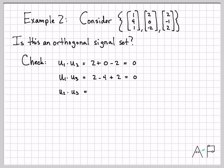And then the last thing I need to check is u2·u3. So I get 2 times 2 is 4, 0 times -1 is 0, -2 times 2 is -4. And I get 0. So every pair that I've selected is orthogonal to each other. So this is an orthogonal signal set. That's all we have to do is check each pair of vectors. They're all orthogonal. So we call this an orthogonal set of vectors.